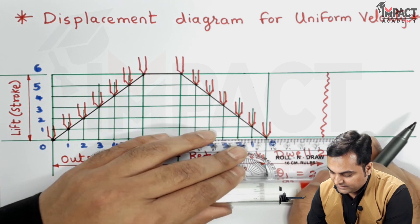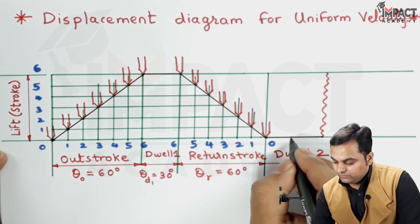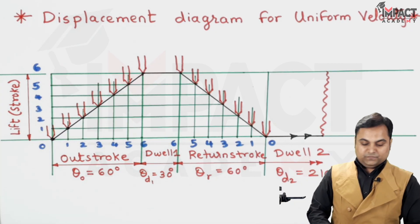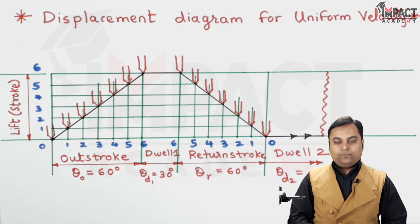So I would be drawing a dark line indicating the dwell for the remaining cycle. So in short, this was a video regarding the displacement diagram for uniform velocity.